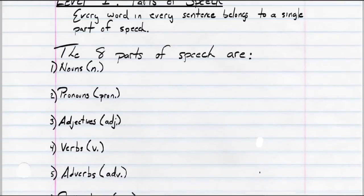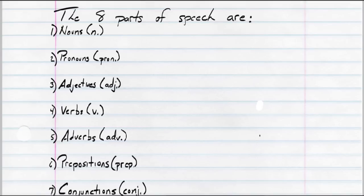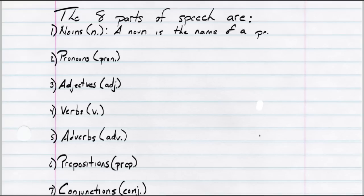I'm going to reposition the notes so we can fill in the information about each of these eight parts of speech. A noun is the name of a person, place, or thing. Some people say nouns are also the name of a person, place, thing, or idea — but I think an idea is a thing, so I lump them together. Keeps it simple.